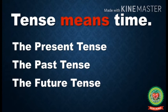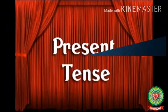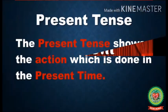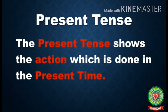First of all, I will discuss with you the first kind of tense, i.e. the present tense. The present tense shows the action which is done in the present time. Let us discuss some examples.